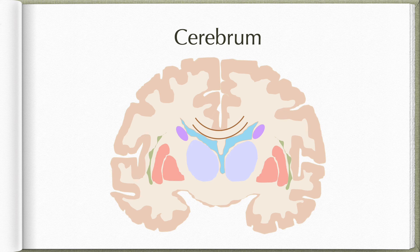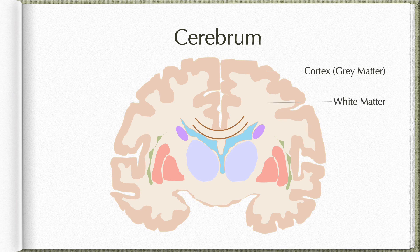The cerebrum forms the highest center for conscious awareness and perception of all sensations. It also helps in initiation of movements, language and speech, and executive functions. The cerebrum has an outer cortex or gray matter and an inner core of white matter.